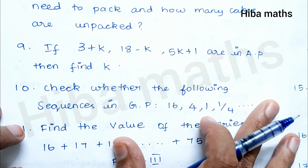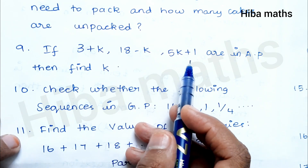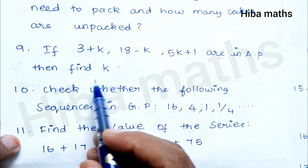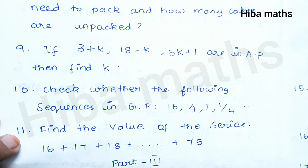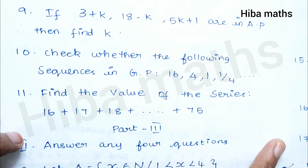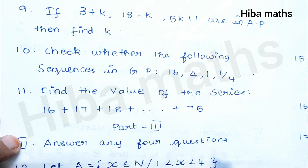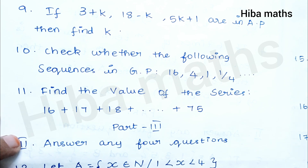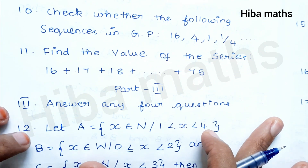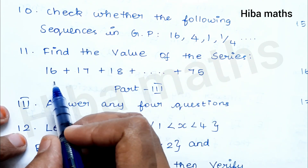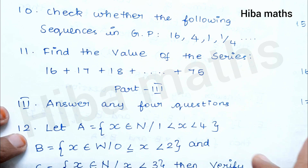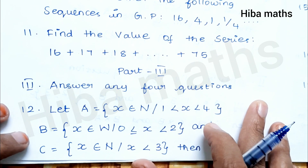Let's see the ninth question: 3+k, 18−k, 5k+1. To check if these are in AP, we use T2 − T1 = T3 − T2. To check for GP, we use R1 = R2, that is T2/T1 = T3/T2. This value determines whether the sequence is GP. For the 11th question, find the value of the series starting with T3/T2 = 16.